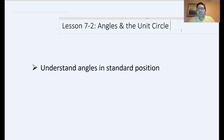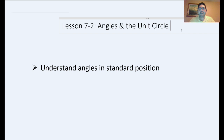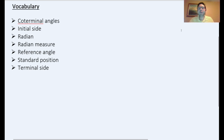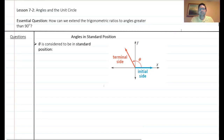Hello class, welcome to this lesson on 7.2. We're going to be talking about angles in the unit circle. We're not going to put much emphasis on the unit circle itself — that's in 7.3. This lesson is mostly on angles. The learning objective is to understand angles in standard position. Vocabulary includes coterminal angles, initial side, radian, radian measures, reference angles, standard position, and the terminal side.